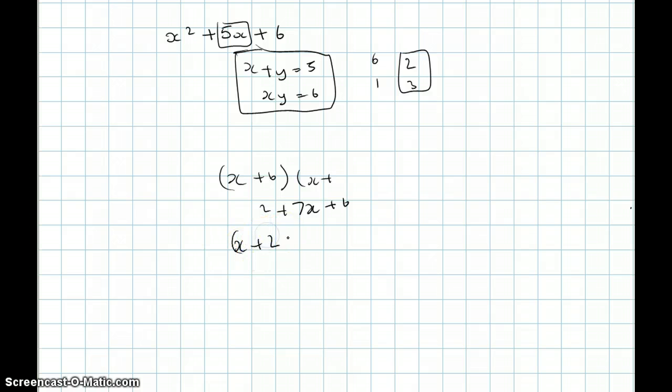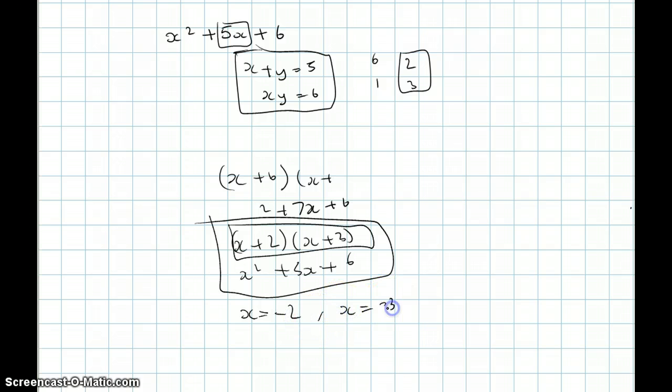x plus 2, x plus 3. So that will give us x squared plus 5x plus 6, what we wanted. So we know that this is our factorized quadratic equation. And to find the x values, we just do this, and this is how you solve a normal quadratic equation.